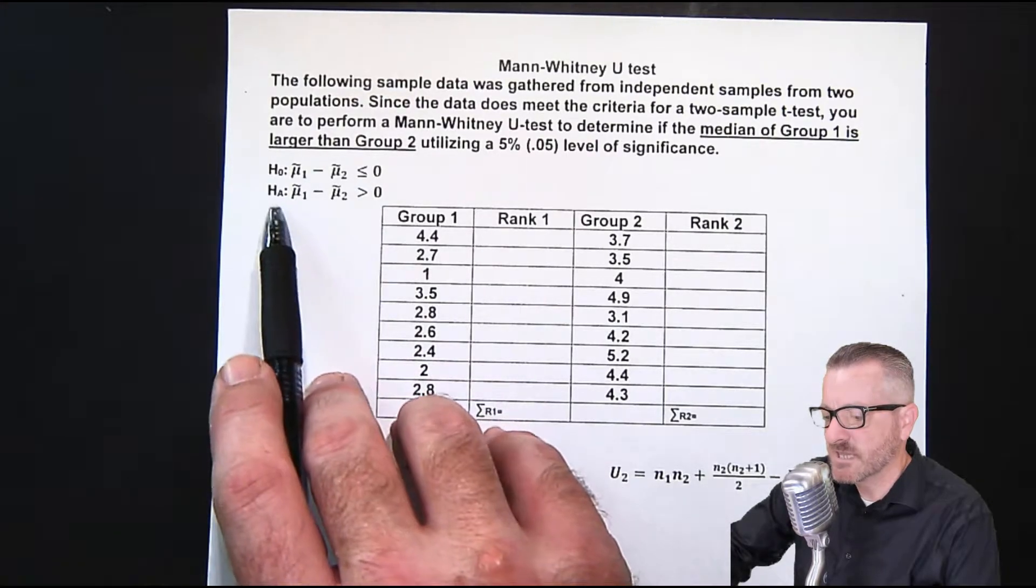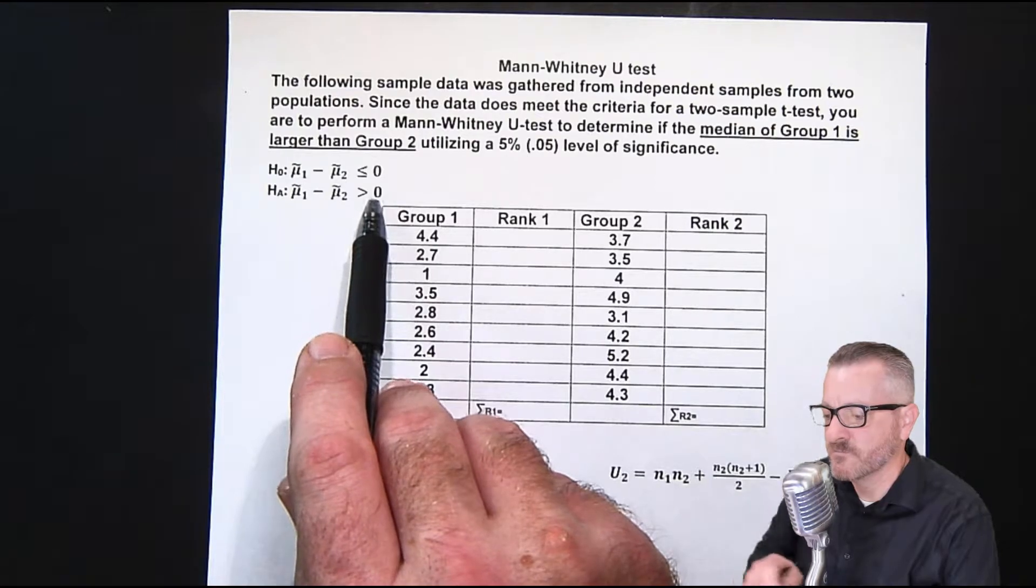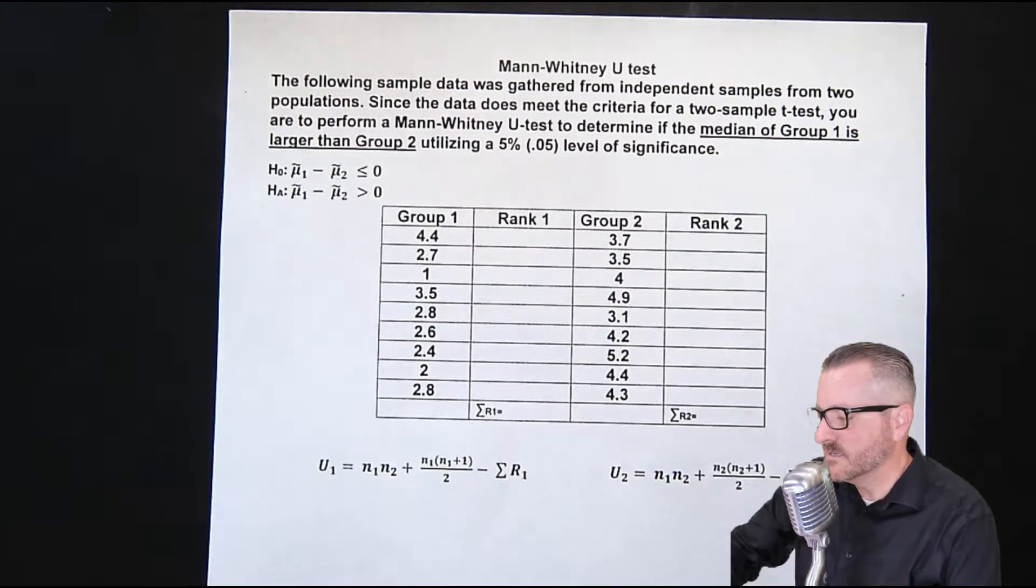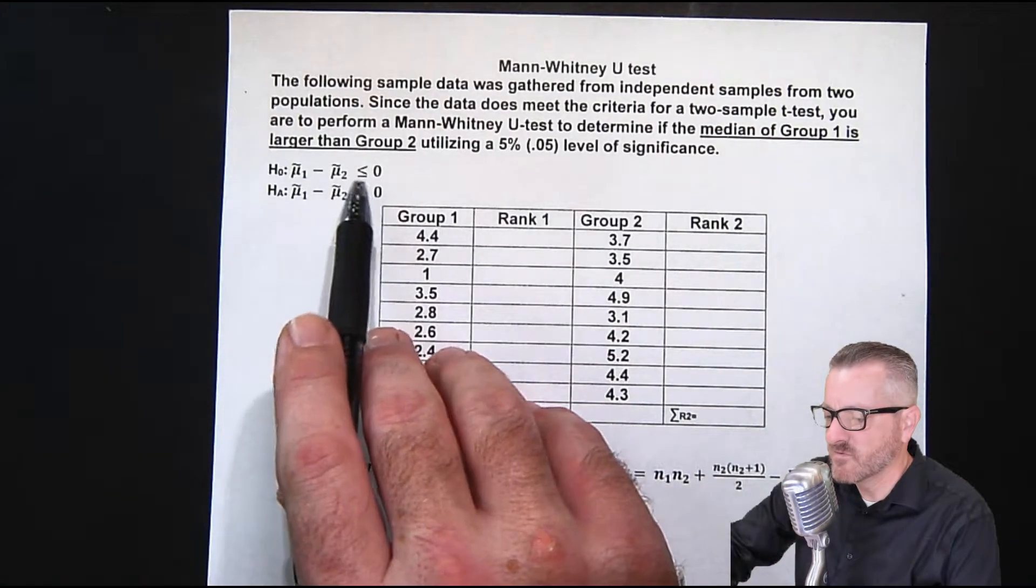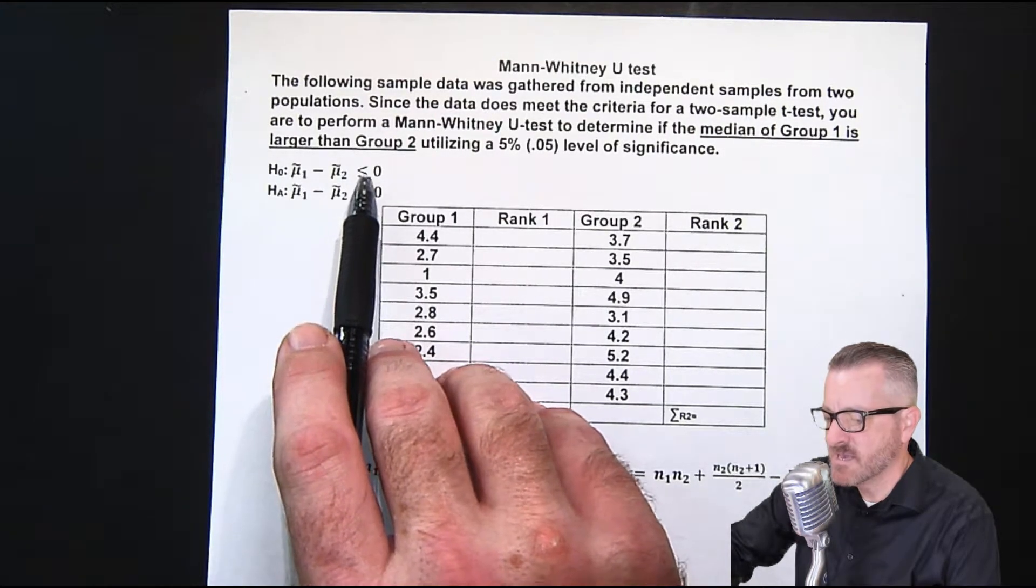On this one, we're saying that it's actually greater than zero. The difference is greater than zero. And the reason why this one not only has the equality part in it, but this is the less than or equal to, because the question says, if the median of group one is larger.